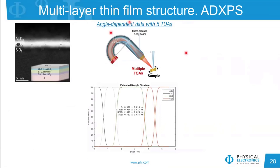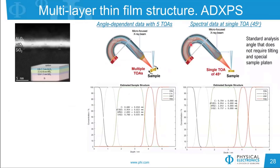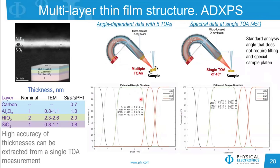Coming back to the data from five takeoff angles, here is the calculated structure. Now using just one takeoff angle — 45 degrees, a standard angle that requires no tilting or special platen — we are able to derive concentrations very close to what was calculated using five takeoff angles. This is a very unique feature of Stratify: accurately calculating thicknesses from a single takeoff angle.